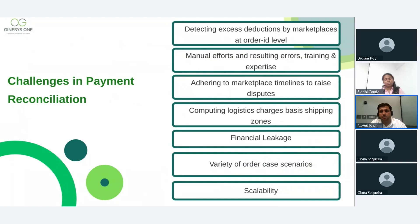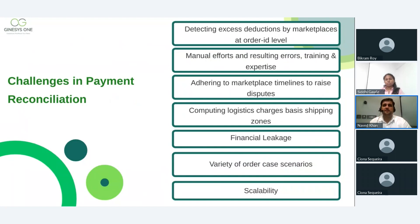The second challenge is manual effort and resulting errors. A system can be reliable, but human errors are possible — leaving out data, missing order IDs, calculating commissions incorrectly, or making wrong calculations on courier charges. Manual reconciliation is time-consuming and insufficient, which can delay detection of financial leakage, especially given the tight timelines imposed by marketplaces.